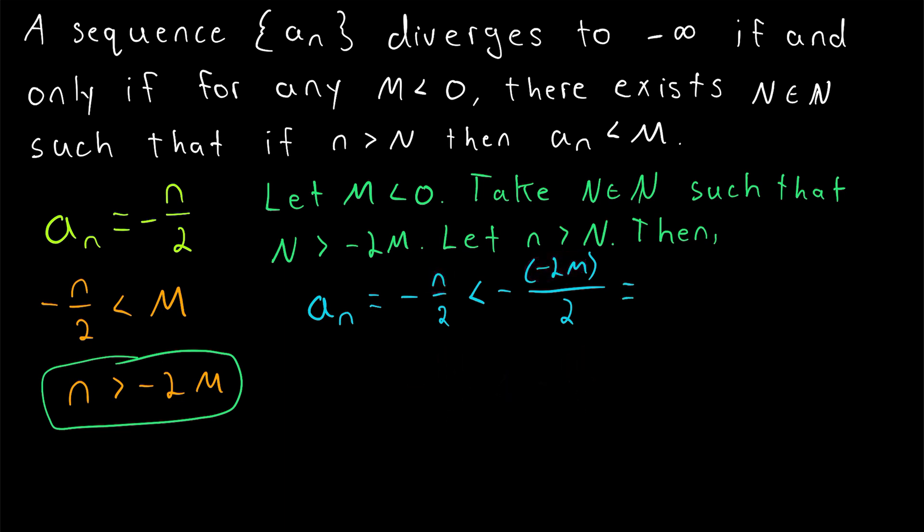And then the rest is very easy. We have two negatives here being multiplied, so they cancel out, and these twos will also cancel out. So this expression is equal to M.